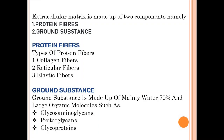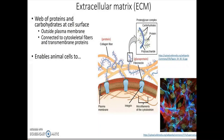Quick recap: a tissue is made up of cells and extracellular matrix. Extracellular matrix is made up of protein fibers and ground substance. This picture here illustrates the extracellular matrix — this is a collagen protein fiber, and what surrounds it is what we call the ground substance.